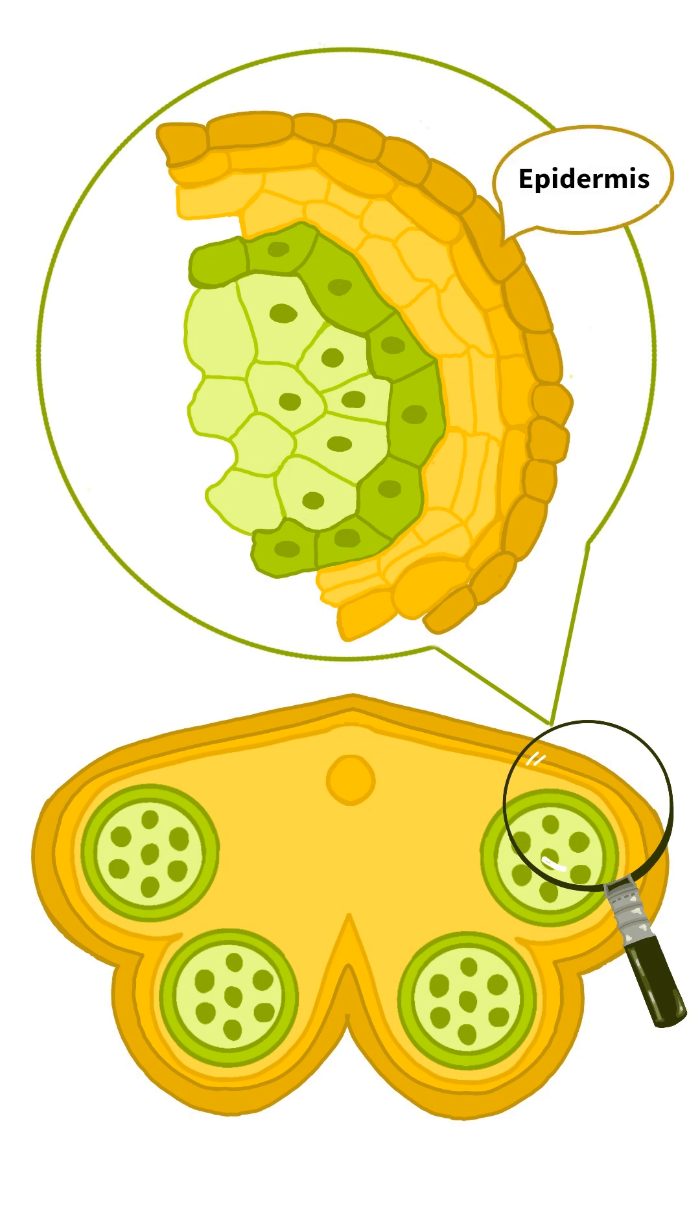Starting with the epidermis, this is the outermost layer consisting of a single layer of cells. Beneath that is the endothecium, which is also a single layer, but has cells thickened with walls of cellulose and sometimes lignin and pectin.